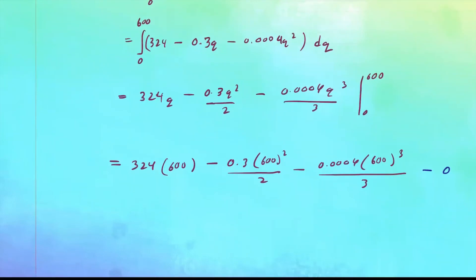So this is going to be equal to 324 times 600, that's about 194,400 minus, so the second number will give us about 54,000, and the last number will give you about 28,800. So just carefully enter them and you'll calculate and you'll get these numbers.